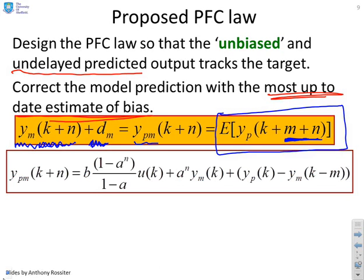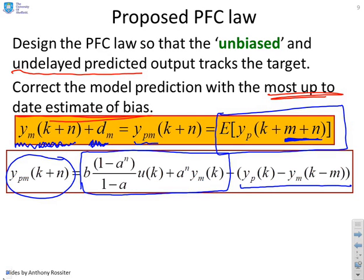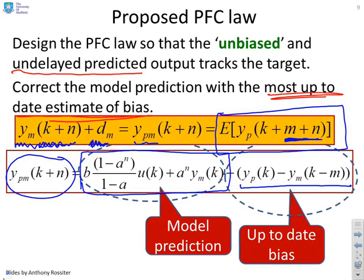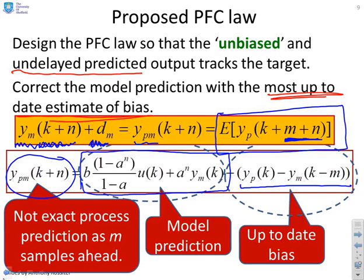Now what I can do is I can actually write expressions for this prediction explicitly because it's based upon the model. So you can see here we have model predictions going n samples ahead, and at the end here we have the bias term. So there's your model prediction, which is exactly the same as in earlier videos, and you'll see there's no delay anywhere in that expression. The only place that the delay comes in is in the up-to-date bias. You'll see there's delay between the yp term and the ym term. And so what we're using for our prediction is not an exact process prediction because it's a mixture of a model n steps ahead and a bias term which used a delay.